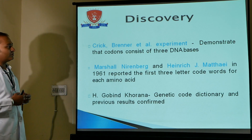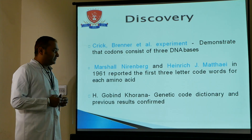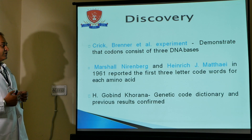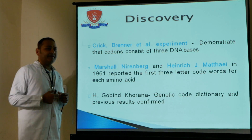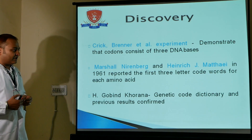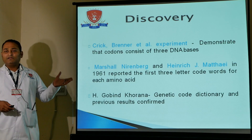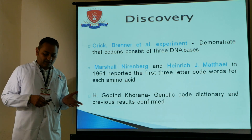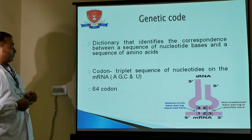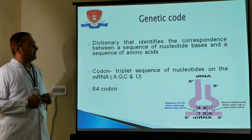Crick et al. demonstrated that the code consists of three DNA bases. Marshall Nirenberg and Heinrich G. Matthaei in 1961 reported the first three-letter code for each amino acid. H. Gobind Khorana then confirmed the genetic code based on previous results.